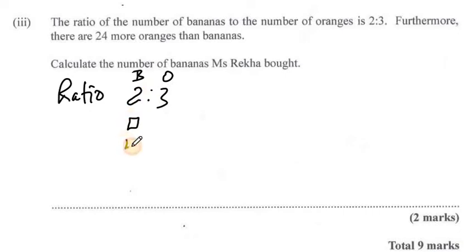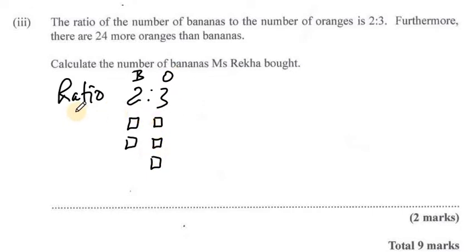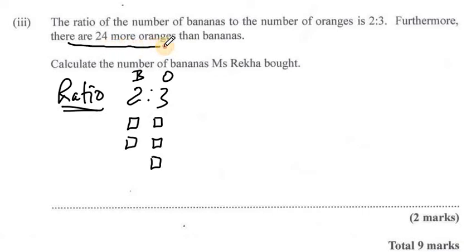So let's say we have 2 boxes of bananas and we have 3 boxes of oranges. The key thing to remember about ratios is that each part has the same amount. Now we are told that there are 24 more oranges than bananas.